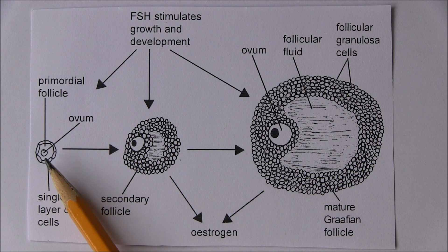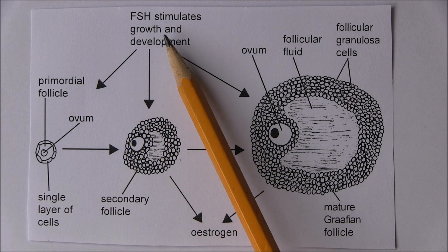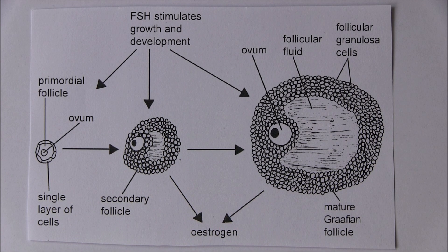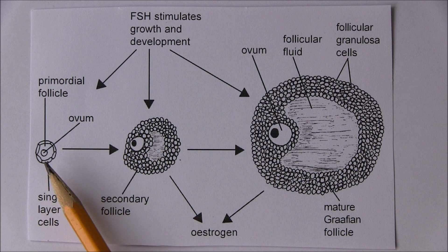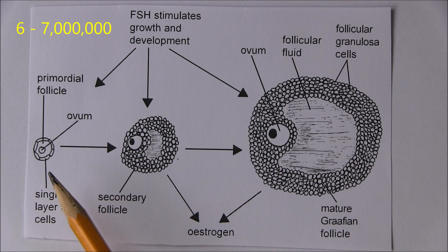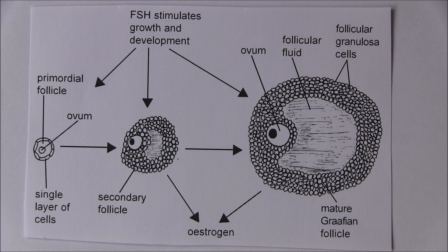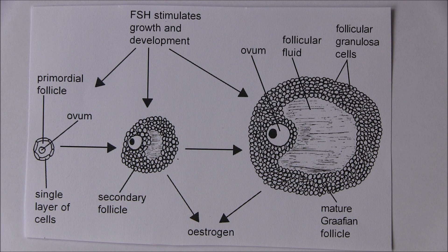These primordial follicles actually develop when a baby girl is a fetus, detectable from about 20 weeks of gestation. They'll just sit there for many years until stimulated by follicle-stimulating hormone at puberty. Interestingly, at 20 weeks gestation there are six to seven million of them, but by birth only about 400,000 remain. They continue to degrade throughout childhood, so at puberty there are about 40,000 left, declining to around 25,000 by age 37 and just 1,000 by age 50.